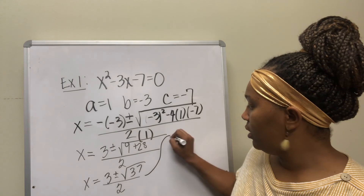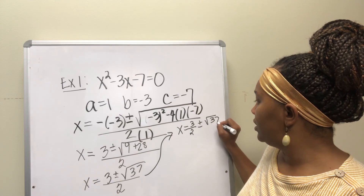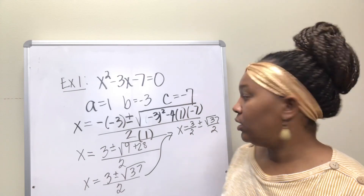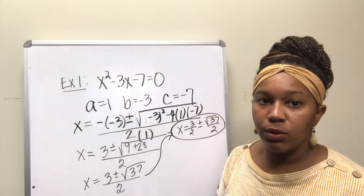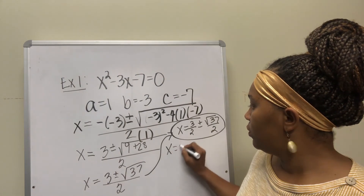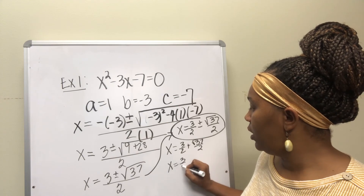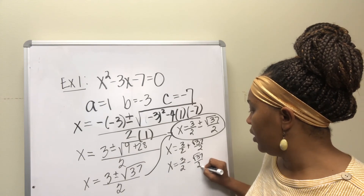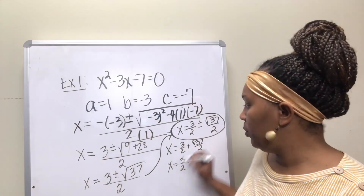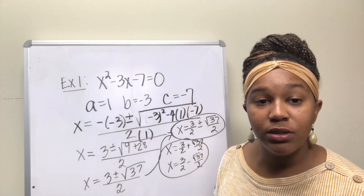You can actually break that up as x equals 3 over 2 plus or minus the square root of 37 over 2. Since 37 is prime, it cannot be broken up any further — so that's completely simplified: three-halves plus or minus the square root of 37 over 2. That gives you two separate answers: x equals 3/2 plus the square root of 37 over 2, and x equals 3/2 minus the square root of 37 over 2. Both are sufficient depending on what platform you're using.